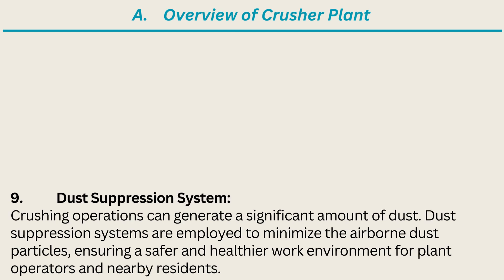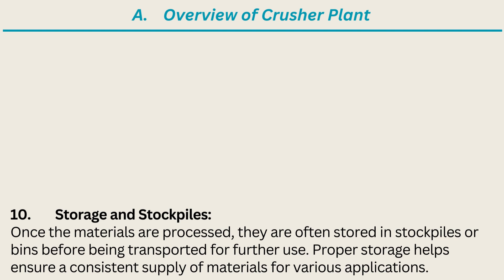9. Dust Suppression System. Crushing operations can generate a significant amount of dust. Dust suppression systems are employed to minimize airborne dust particles, ensuring a safer and healthier work environment for plant operators and nearby residents. 10. Storage and Stockpiles. Once the materials are processed, they are often stored in stockpiles or bins before being transported for further use. Proper storage helps ensure a consistent supply of materials for various applications.